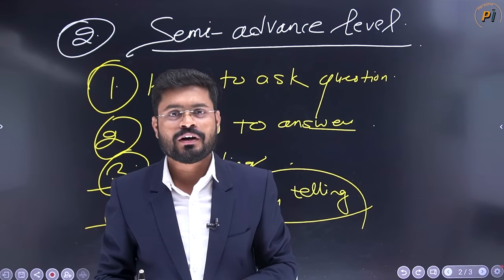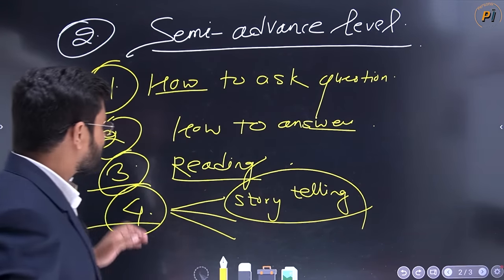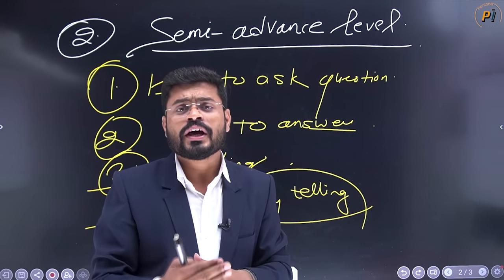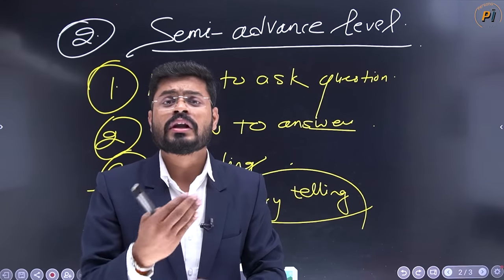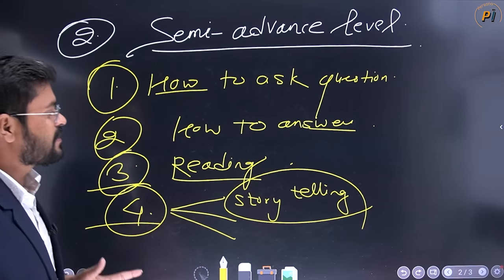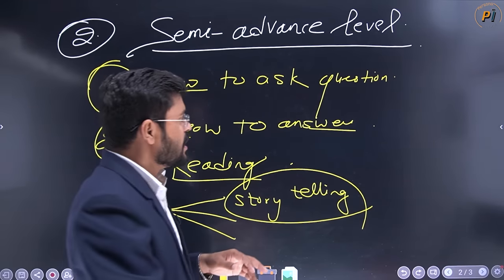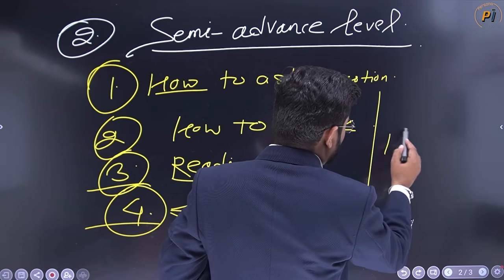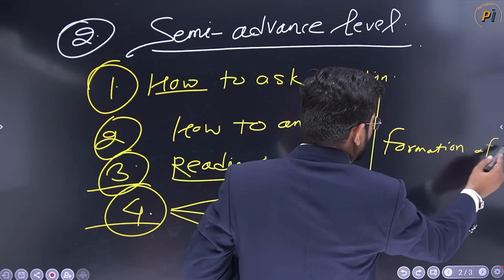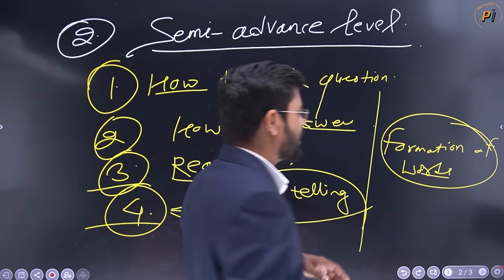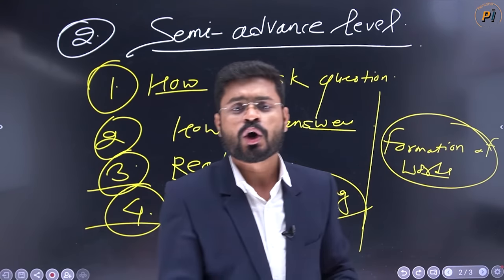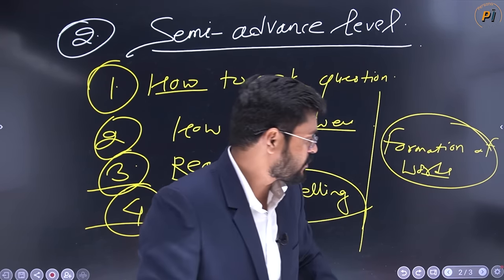When you follow this strategy, you will feel the changes. You will find that you are learning something new. You will feel you are improving yourself and building something good for the future. This is your semi-advanced level. Besides, from the semi-advanced level, you will also want to learn Formation of Words — making nouns from adjectives and adjectives from nouns — which will help you perform better.